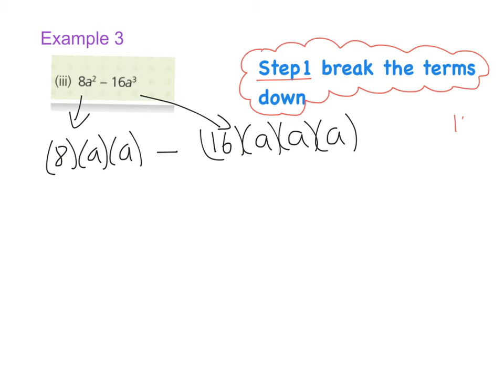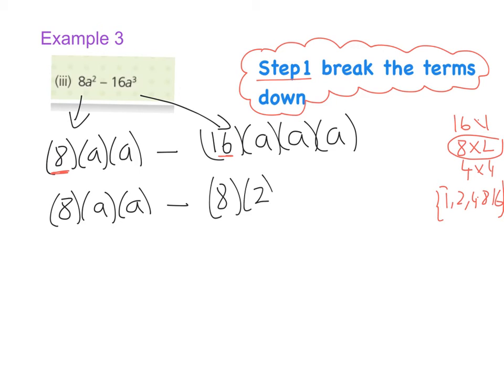If I was to write them in the corner, it would be 16 times 1, 8 times 2, and 4 times 4. So the factors of 16 are 1, 2, 4, 8, and 16. And if I was to rewrite 16 as 8 times 2, I would have another common factor with this 8 here. So let's do that. So this one is going to remain 8, bracket 8, bracket a, minus, instead of writing 16 now, I'm going to write 8 times 2.